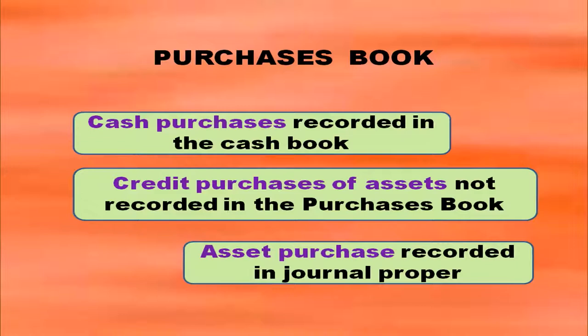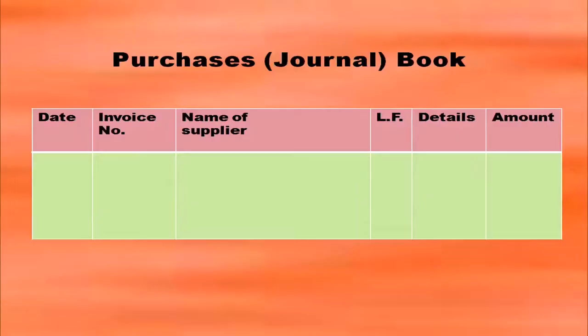Credit purchase of assets are not recorded in the purchases book. Asset purchases are recorded in the journal proper. You have to write the purchases book according to the format with date, invoice number, name of supplier, ledger folio, details and amount columns.